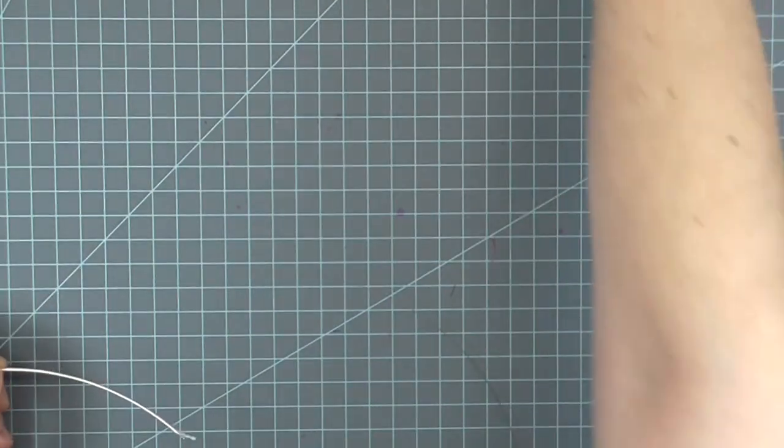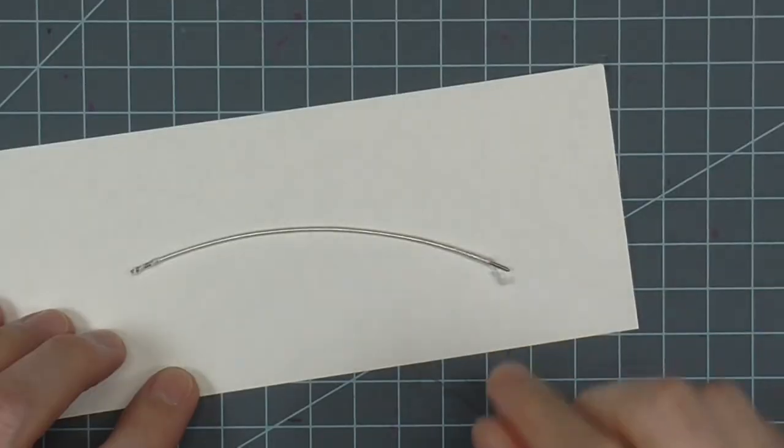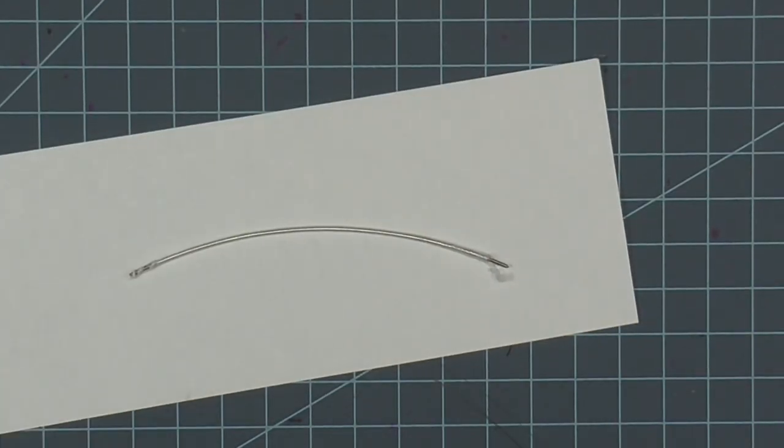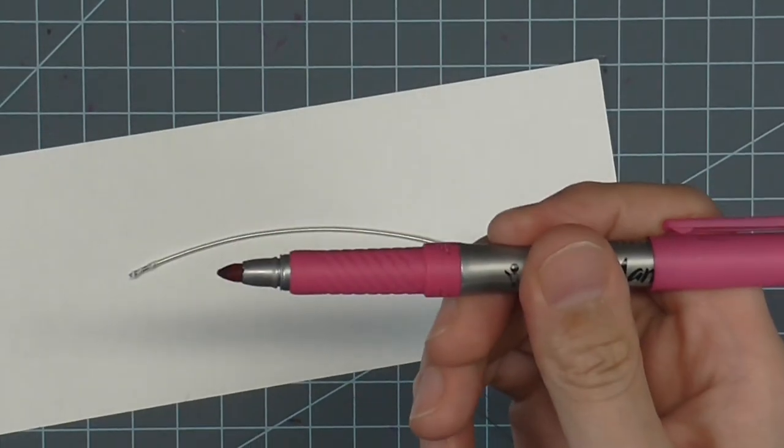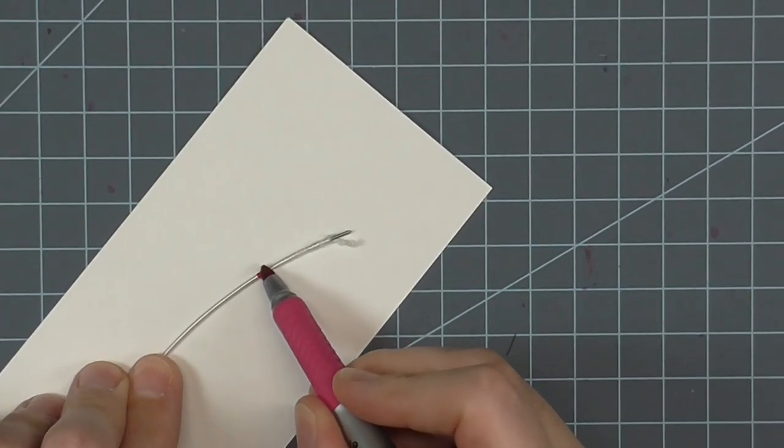If your wire is going to be exposed, you can easily color the white wire with a permanent marker. Place the wire on a scrap of paper and paint it with the marker. The fiber easily absorbs the color. Be sure to color each side of the wire.